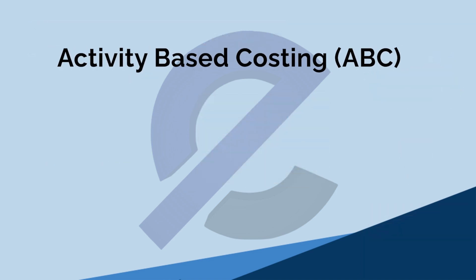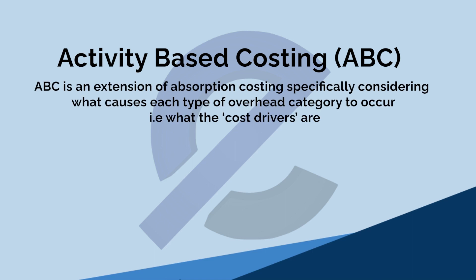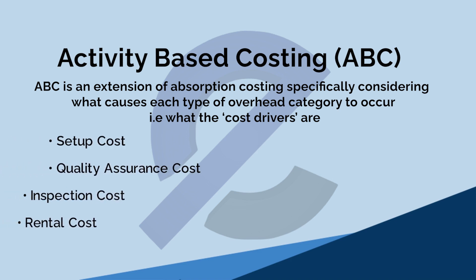So what is activity-based costing? Activity-based costing is an extension of absorption costing, specifically considering what causes each type of overhead category to occur. It identifies the different activities and the quantity of those activities which are incurring different types of overhead categories — for example, setup cost, quality assurance cost, inspection cost, rent, and other overheads. So it focuses on what causes each type of overhead to be incurred — that is, what the cost drivers are, what activities drive the cost.